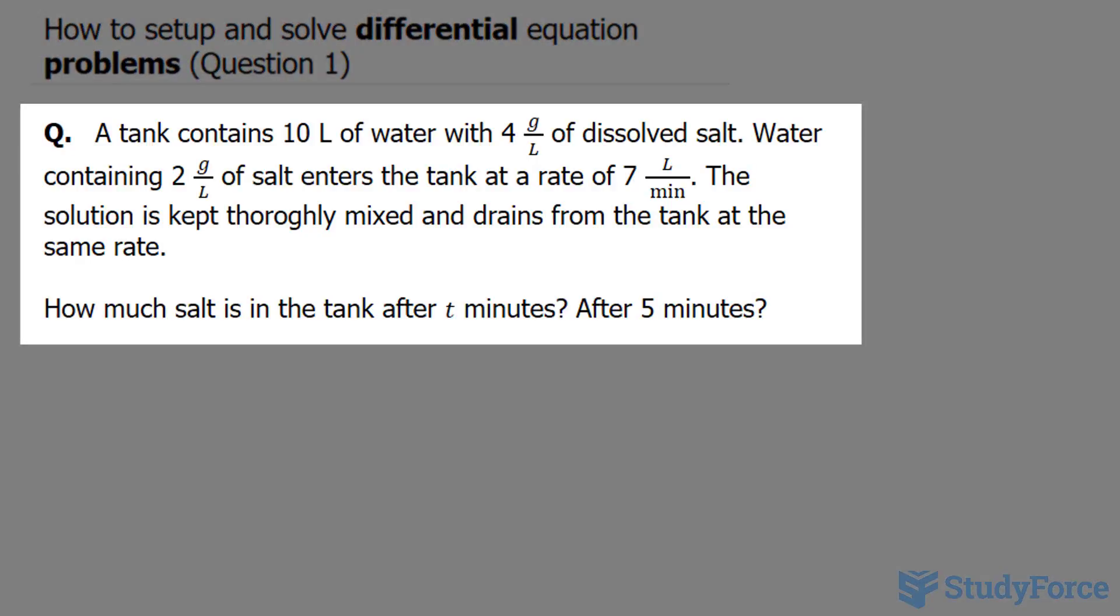The question reads: a tank contains 10 liters of water with 4 grams per liter of dissolved salt. Water containing 2 grams per liter of salt enters the tank at a rate of 7 liters per minute. The solution is kept thoroughly mixed and drains from the tank at the same rate.